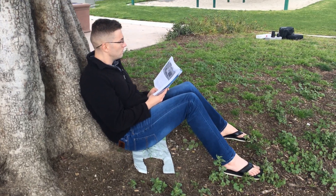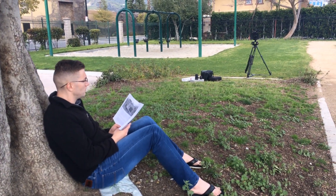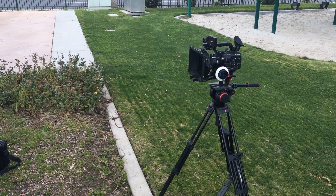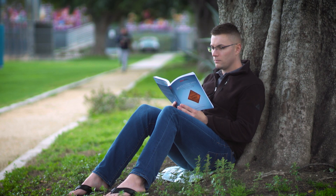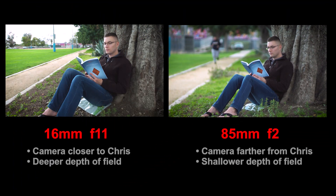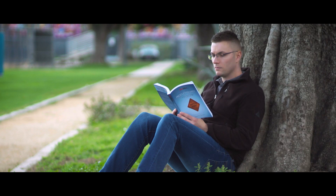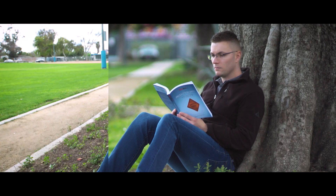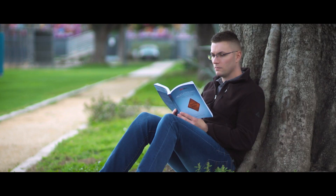If I want an even shallower depth of field, I'll use an 85mm lens, back up the camera a few more meters to maintain the same shot size, then open the aperture all the way to f2. Comparing this shot with the very first, you'll notice how the focal length changes the depth in the frame and how the aperture changes the size of the depth of field. Even though both shots are about the same subject reading a book in the park, each shot has a completely different emotional tone.